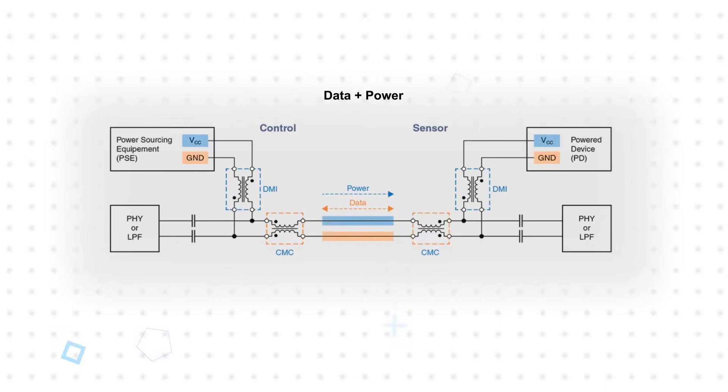Adding power transmission so that the field device requires only one connection for power and data requires the common-mode choke and an appropriately rated PID-SMD differential-mode inductor.